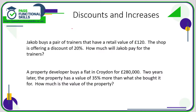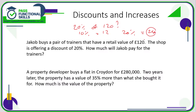So what is 20% of £120? Well, 10% is £12, so 20% is double that, which is £24. We need to subtract £24 from £120, so therefore Jakob will spend £96 on the trainers.